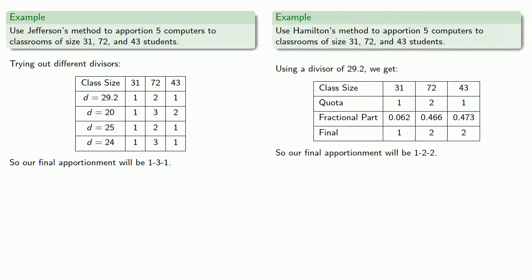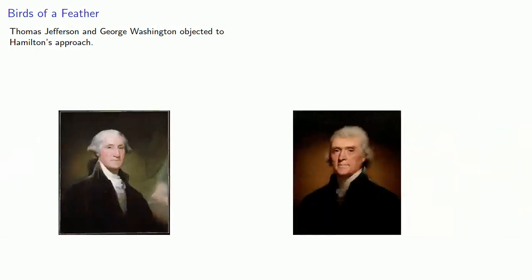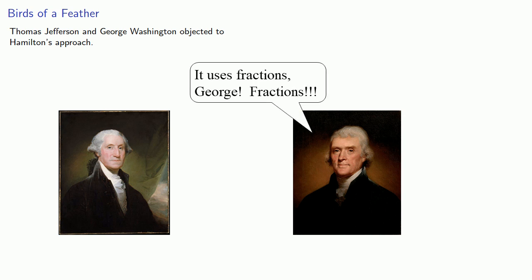It's worth noting that the two apportionment methods actually give us different apportionments, which means it is important to decide how we want to proceed. This choice was left to George Washington. Thomas Jefferson and George Washington both objected to Hamilton's approach. Jefferson even said that it depended on a difficult and inobvious doctrine of fractions. In other words, they thought it was too complicated.